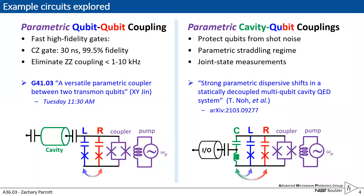The second experiment is parametric cavity-qubit coupling where we now have two qubits coupled to a cavity mode that also tunes with the coupler. This allows us to protect the qubits from shot noise and enter a parametric squeezing regime that can lead to interesting joint state measurements. To learn more about this you can read Taewon's paper on the archive.